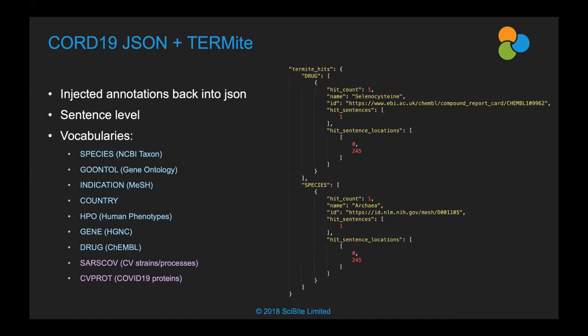The biggest limitation in comparison to Termite is that machine learning methods are not aligned to ontologies. Typically, you'll get a prediction that some span of text is a gene or a disease, but it won't tell you what gene or disease it is. So you can't automate going from that span of text into the wider ecosystem, connecting to databases and looking at other available data. We wanted to use Termite to add annotations into the released JSON.